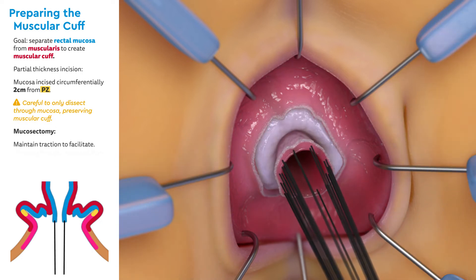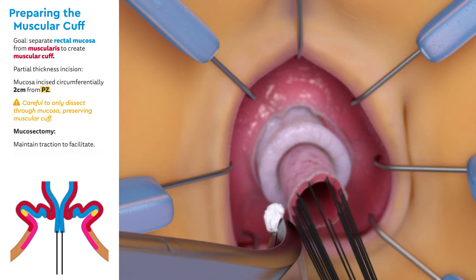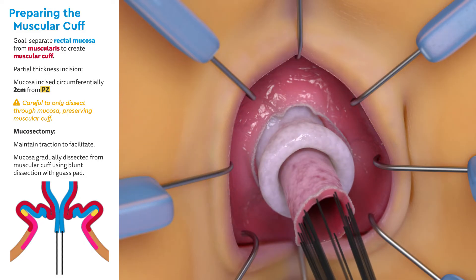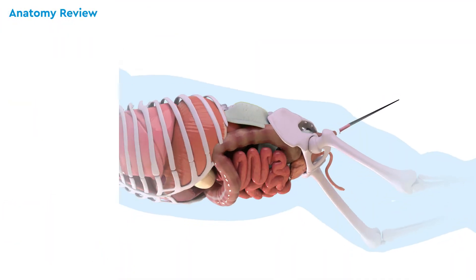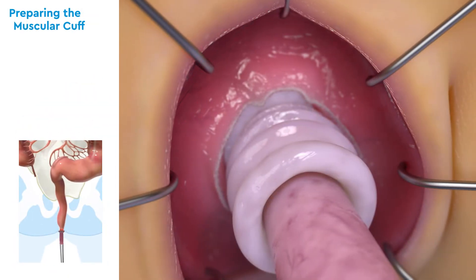Firm and continuous traction of the sutures is used to expose the mucosa and facilitate the mucosectomy. The mucosa is gradually dissected from the muscular cuff using blunt dissection with a gauze pad. The mucosectomy will continue for the length of the pelvic portion of the rectum, usually 7 cm, until the peritoneal cavity is identified by the peritoneal reflection. Again, blunt dissection must be used for the duration of the mucosectomy. This process has been sped up in this demonstration.